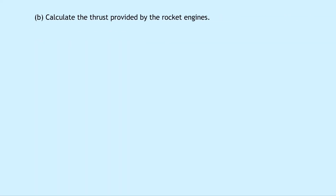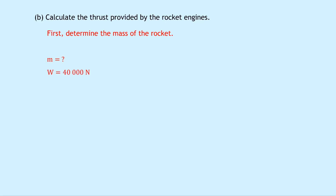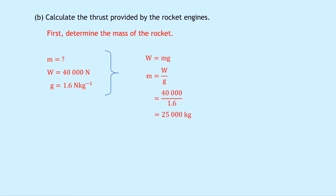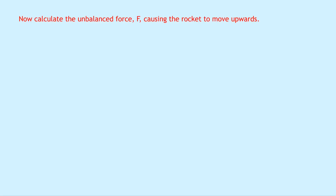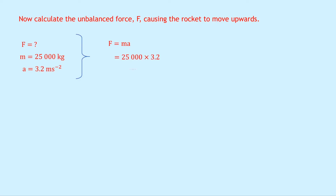Part B asks to calculate the thrust from the rocket engines. First we determine the mass using W equals MG, rearranging to M equals W over G. The gravitational field strength on the moon is 1.6 Newtons per kilogram, so: 40,000 divided by 1.6 gives a mass of 25,000 kilograms. Next we calculate the unbalanced force using Newton's second law: F equals MA gives 25,000 times 3.2, which equals 80,000 Newtons.